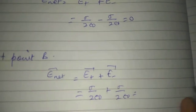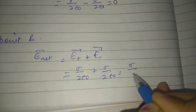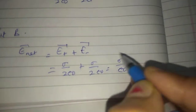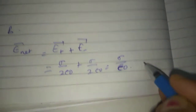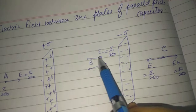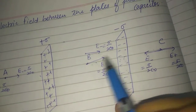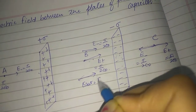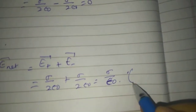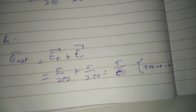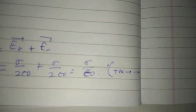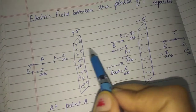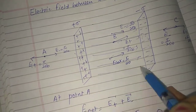The net electric field at point B is e plus plus e minus, which equals Sigma by two epsilon naught plus Sigma by two epsilon naught, giving Sigma by epsilon naught. Both fields point from the positive plate to the negative plate, so the net field is also directed from positive to negative. A uniform electric field of magnitude Sigma by epsilon naught exists between the two plates of the capacitor.